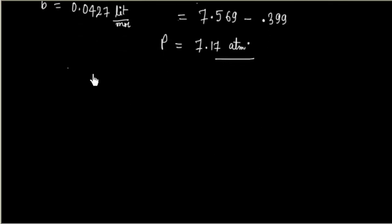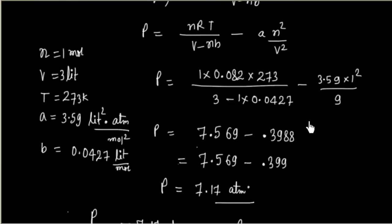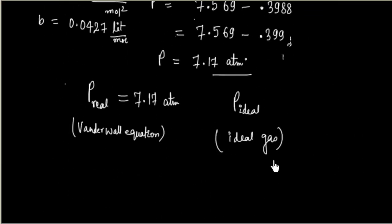We have calculated pressure using real gas, that is Van der Waals. This pressure is coming out to be 7.17 atmospheric pressure. We also calculated pressure using ideal gas equation, and this time pressure is 7.462 atmospheric pressure.